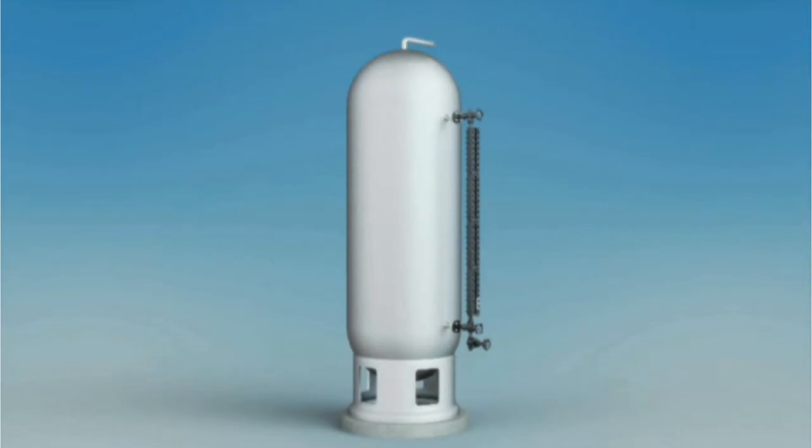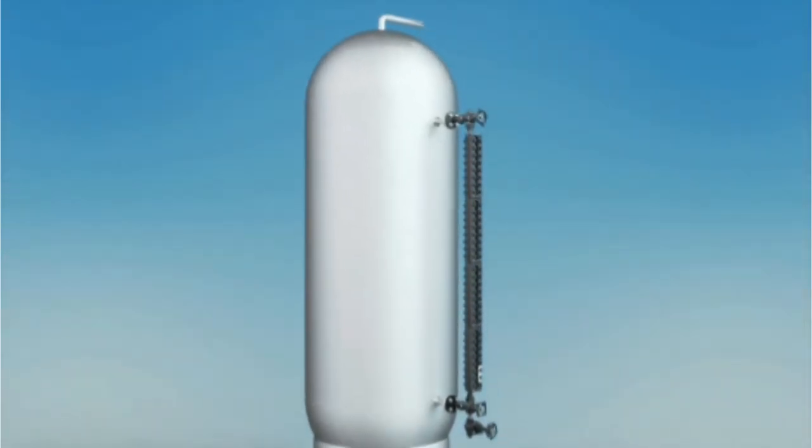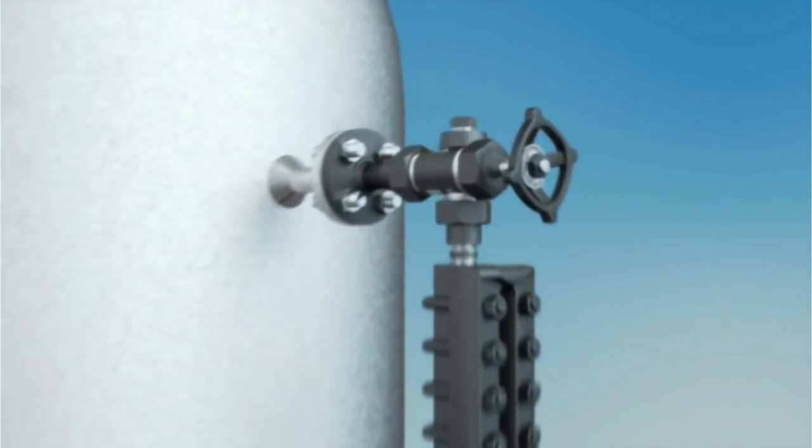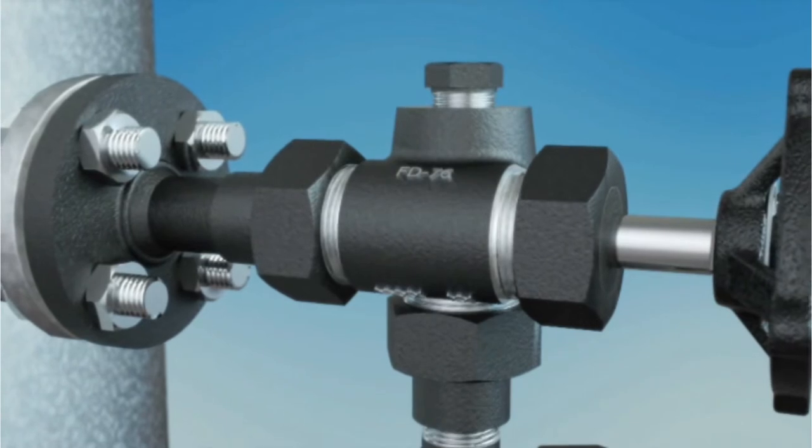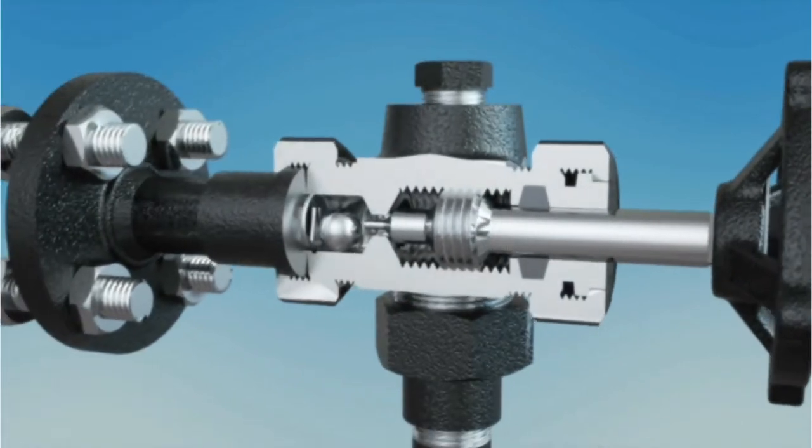This video illustrates the correct procedure for commissioning a Jorgenson glass level gauge equipped with safety ball check valves when liquid is already present in the vessel. It further illustrates how ball check valves operate and a common commissioning mistake.